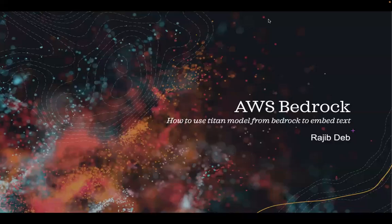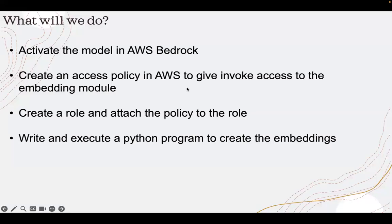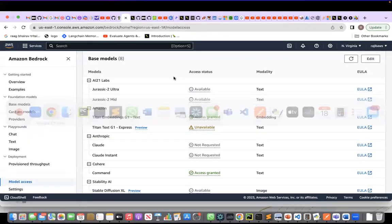In this recording I will show how we can use the Titan embedding model from Bedrock to create text embeddings. We'll first activate the Titan embedding model in AWS Bedrock, then create an access policy in AWS to give only invoke access to the embedding model, then create a role and attach the policy to the role, and finally write and execute a Python program to create the embedding. Let's go to the AWS console.